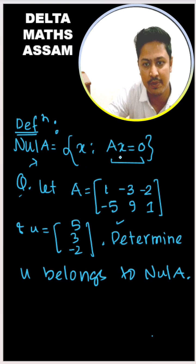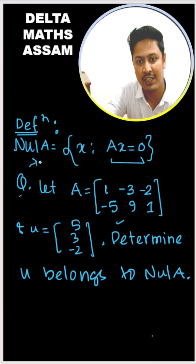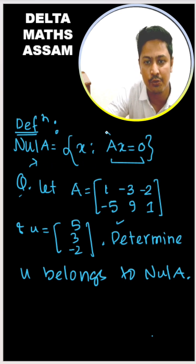It is the collection of all vectors which satisfy the relation Ax = 0. For null space of A, all vectors x must satisfy the relation Ax = 0.